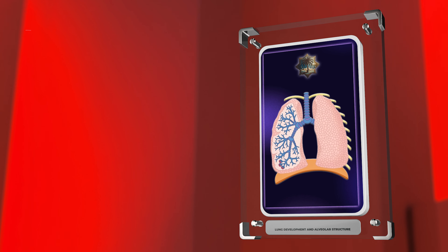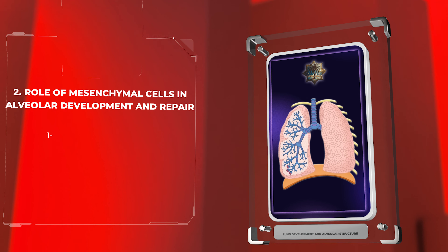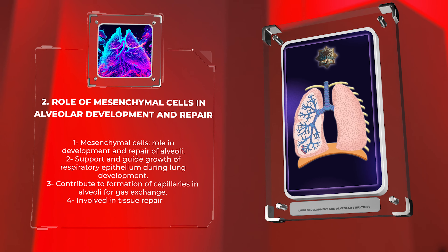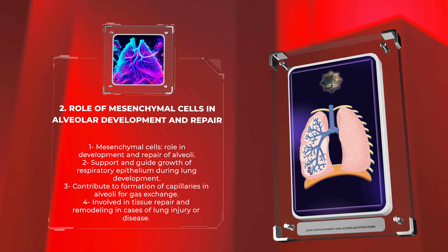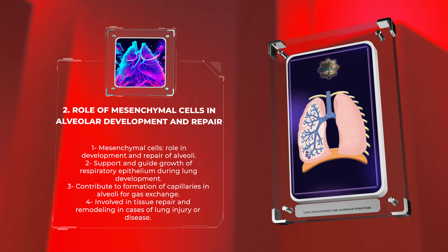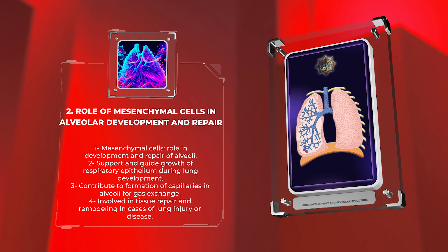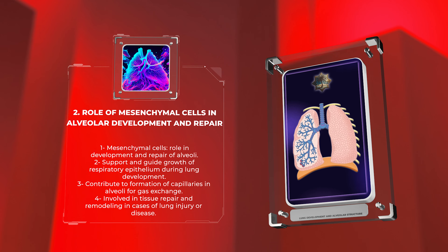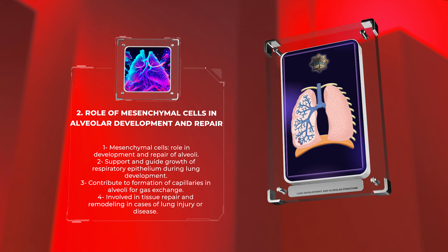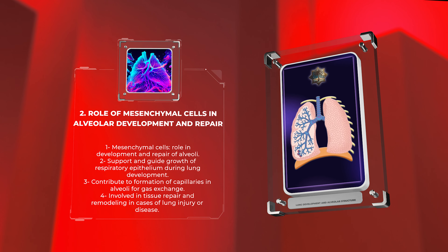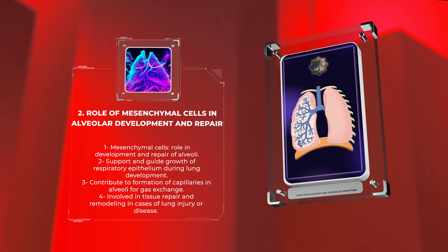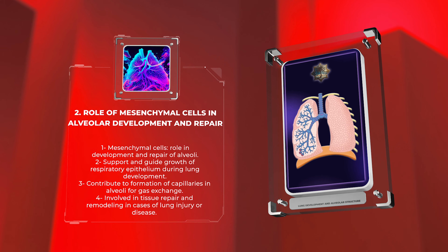We will explore the role of mesenchymal cells in the development and repair of the alveoli. These connective tissue cells support and guide the growth of the respiratory epithelium during lung development. They also contribute to the formation of capillaries in the alveoli for efficient gas exchange.